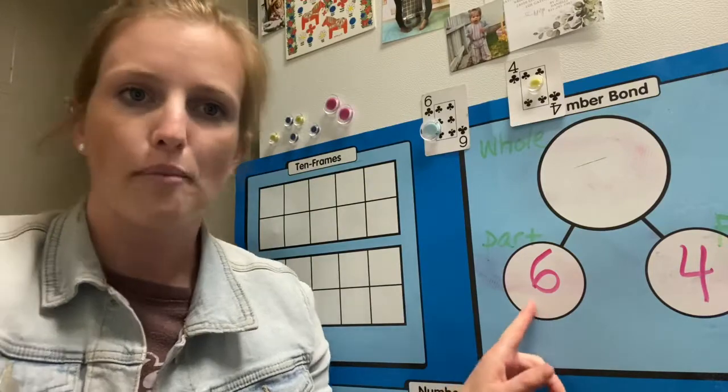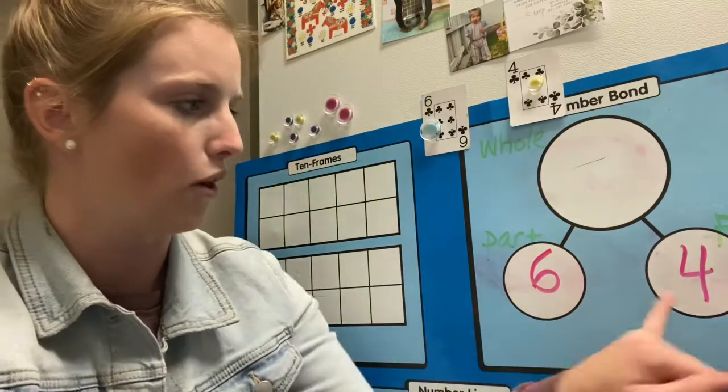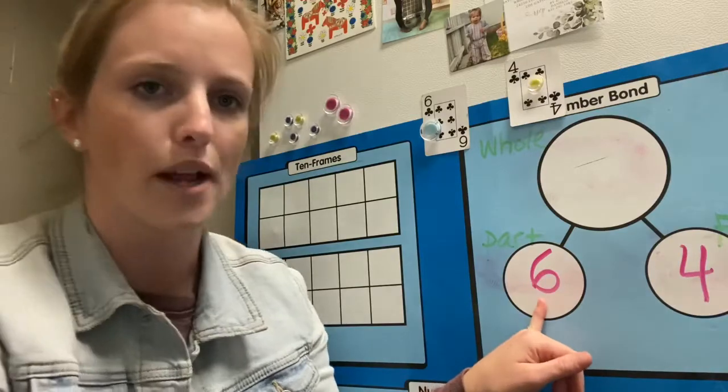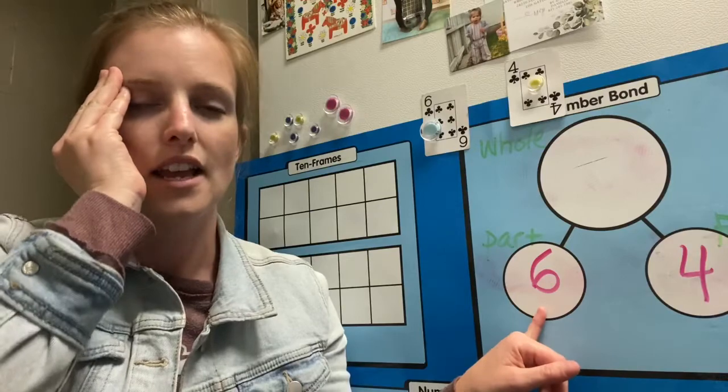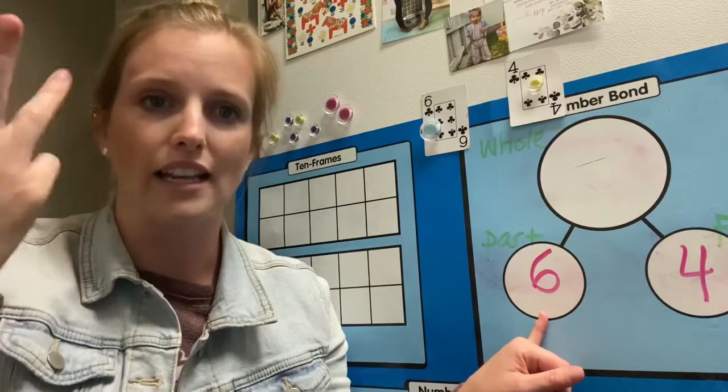you take the bigger part. So what's bigger, four or six? Six is the greater number and you put it into your head. So you visualize the six. So in my head I'm seeing six. Now you use your fingers to count on the next number.